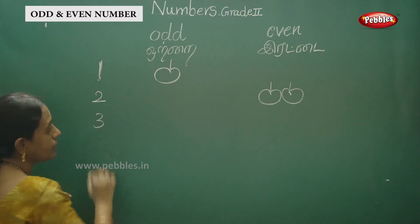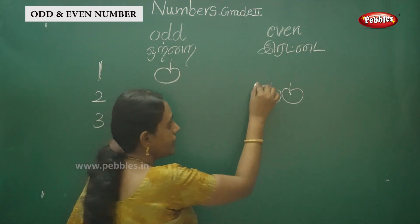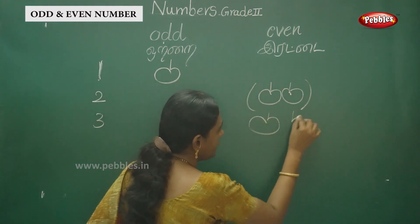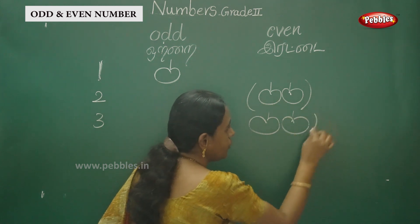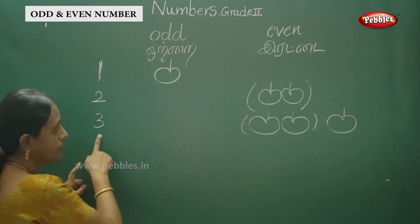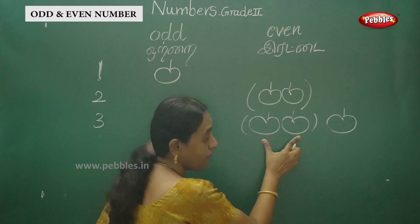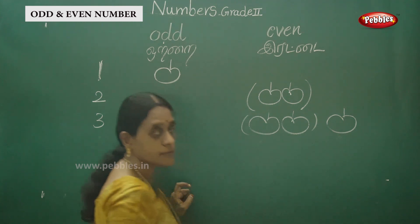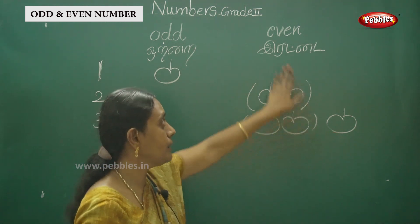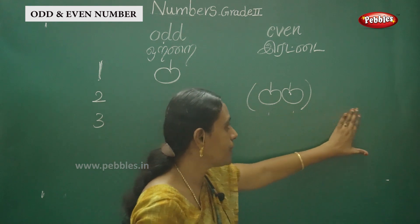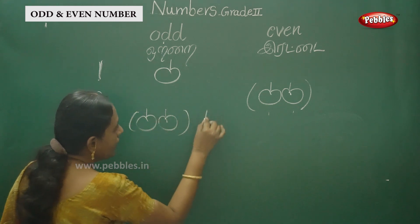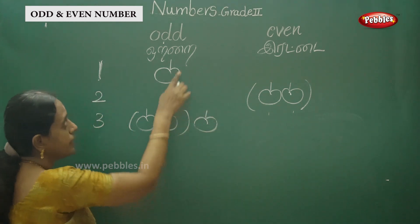Three — you need to do the drawing. The two forms a pair, and three brings in one extra. Three is one pair and one group left over. This is an odd number.